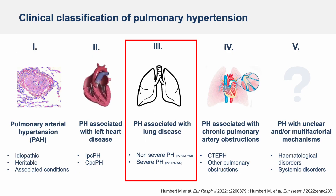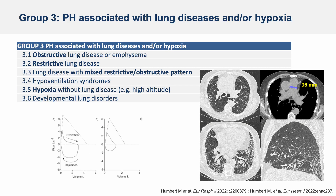Let's move to Group 3 of PH, also called PH associated with lung disease. Group 3 includes PH due to hypoxia, which is low oxygen levels, but it can also be due to chronic lung diseases such as obstructive lung disease — where the lung airways narrow and make it harder to exhale — as seen in COPD and emphysema. Among diseases inducing PH in Group 3 we can also find restrictive lung diseases, in which the lungs have difficulty expanding when inhaling. Interstitial lung diseases and pulmonary fibrosis are examples of restrictive lung diseases.